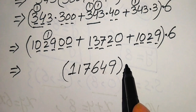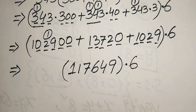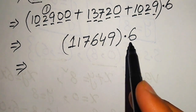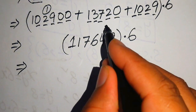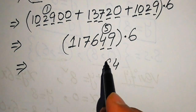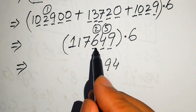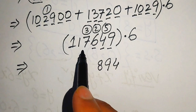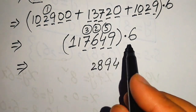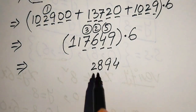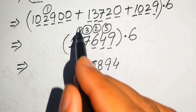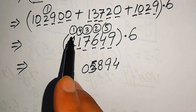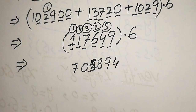In the final step we multiply this result by 6. Going digit by digit: 6 times 9 is 54, write 4 carry 5; 6 times 4 is 24, plus 5 is 29, write 9 carry 2; 6 times 6 is 36, plus 2 is 38, write 8 carry 3; 6 times 7 is 42, write 2 carry 4; 6 times 7 is 42, plus 3 is 45, write 5 carry 4; 6 times 1 is 6, plus 4 is 7.